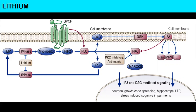The GPCR activates the entire cycle, and the key chemicals playing an important role are PIP2, diacylglycerol (DAG), and inositol triphosphate (IP3). These are produced, and diacylglycerol is actually what produces mania.